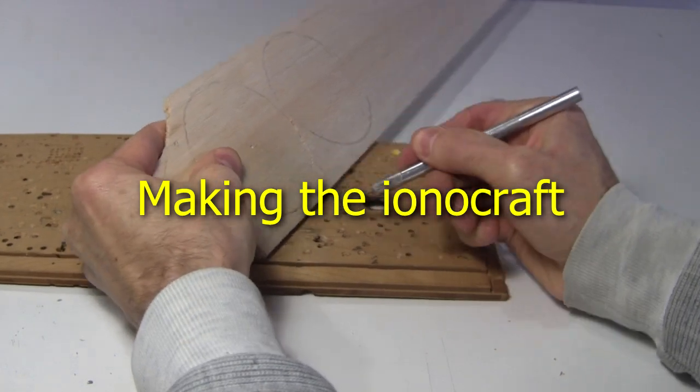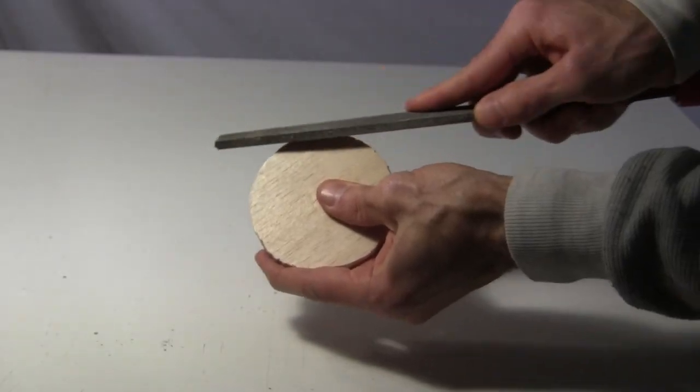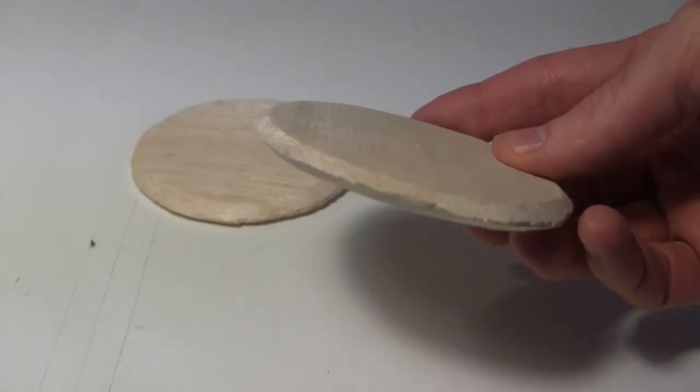Here's how the ionocraft are made. I start by cutting two discs out of some lightweight and not too thick balsa wood. I file the edges to give them a nice taper all around.